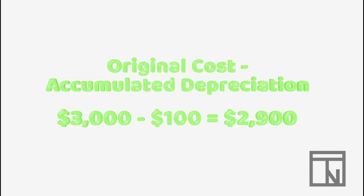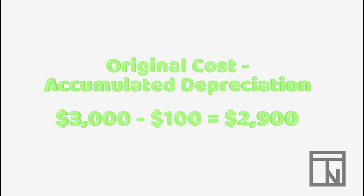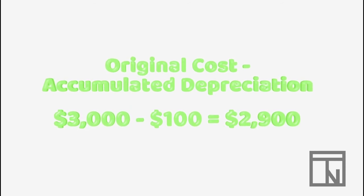Net or book value is simply the asset's original value minus the current year's accumulated depreciation. For example, Bob's equipment originally cost $3,000. At the end of year 1, Bob had an accumulated depreciation value of $100.